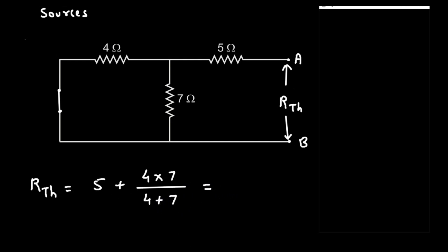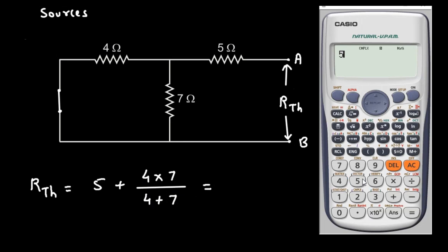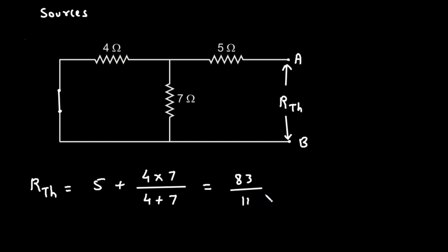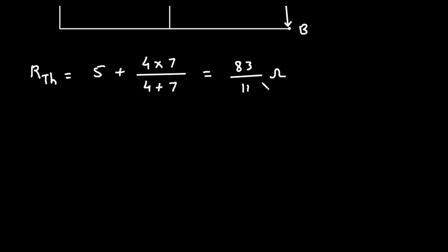So here we can write RTH equal to this total resistance. We can see this 5 ohm is in series with the parallel combination of 4 ohm and 7 ohm. So it will be 5 plus (4 × 7) / (4 + 7), which equals 83/11 ohm. So the precise value for RTH is 83/11 ohm.